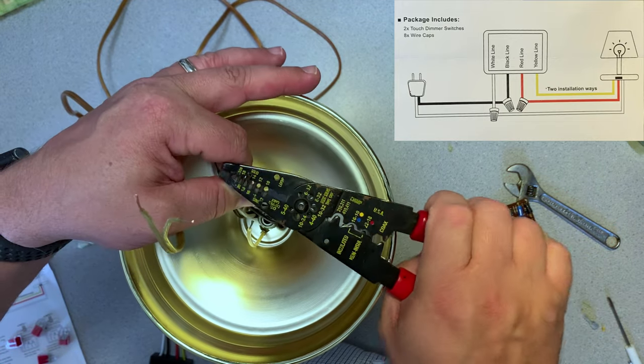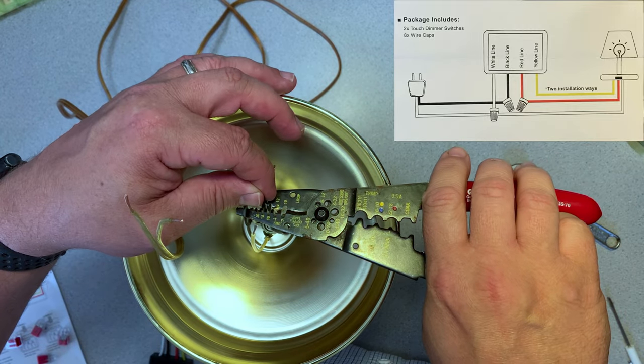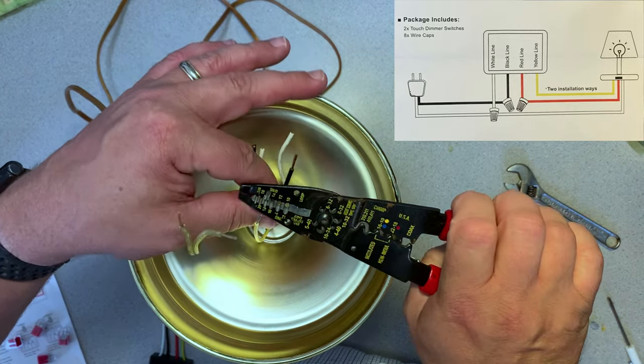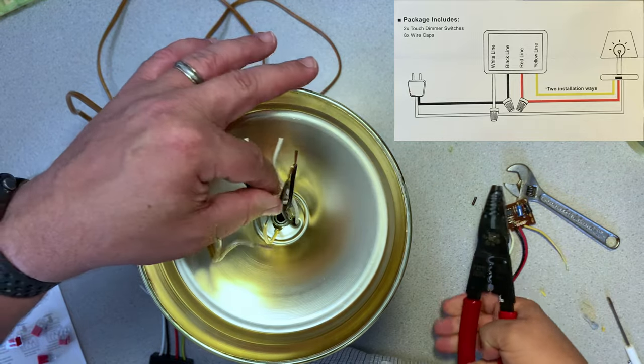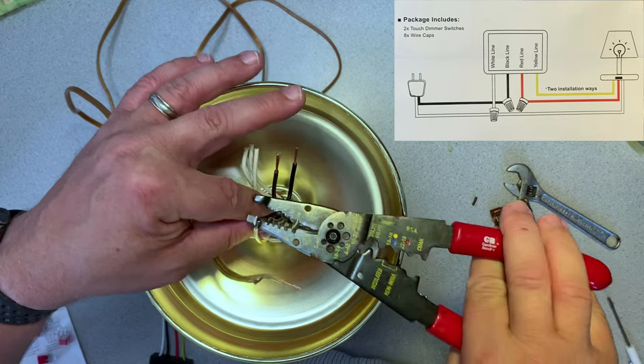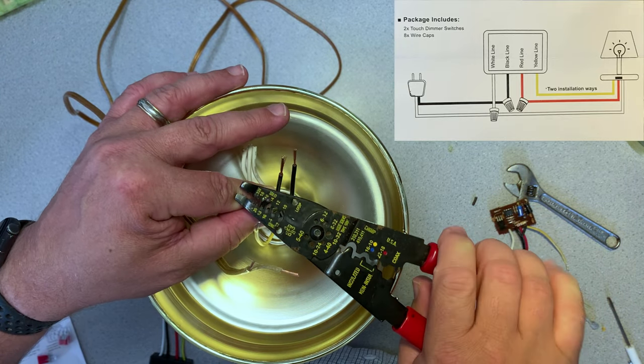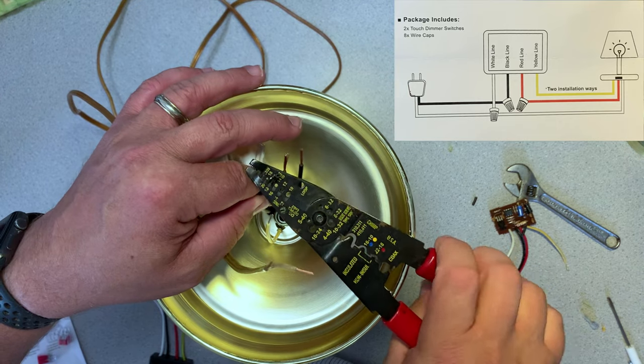On the black and the white wires, I'm going to strip back just a little bit more than I do otherwise because I've got so many of them coming together in one place. All three of the black, all three of the white are going to have to be connected together. So I make those just a little longer so they have enough room to work with them.